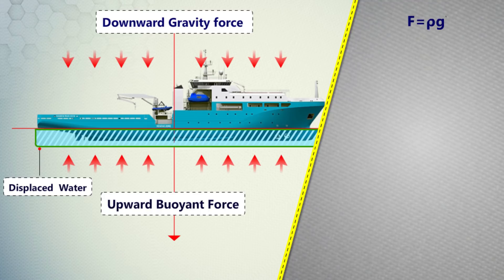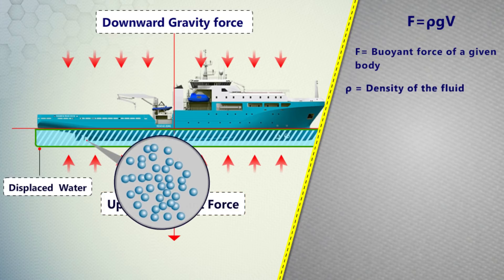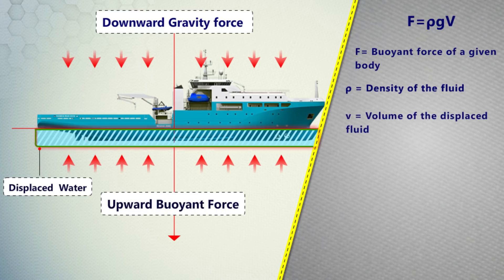Now let's understand the formula. The formula is F = ρgV, where F equals the buoyant force of a given body, ρ equals the density of the fluid, V equals the volume of the displaced fluid, and g equals the acceleration due to gravity.